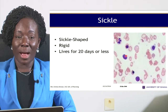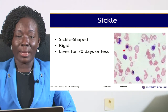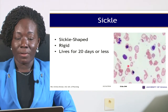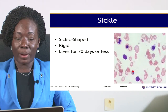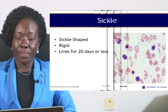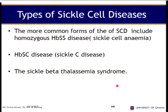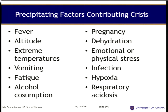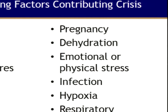There is rapid breakdown of sickle red blood cells. The types of sickle cell disease include HbSS (sickle cell anemia), HbSC disease, and beta thalassemia.